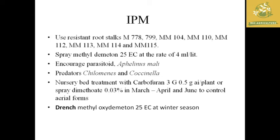For integrated pest management of woolly aphids, use resistant rootstock varieties and spray methyl demeton 25 EC at 4 ml per liter. Biological control methods include engaging the parasitoid Aphelinus mali, releasing predators like Chrysopa and Coccinella beetles. Nursery bed treatment with carbofuran at 0.5 gram per plant, spraying dimethoate at 0.03% in March, April, and June to control aerial forms, and drenching with methyl demeton 25 EC in winter are effective control measures.